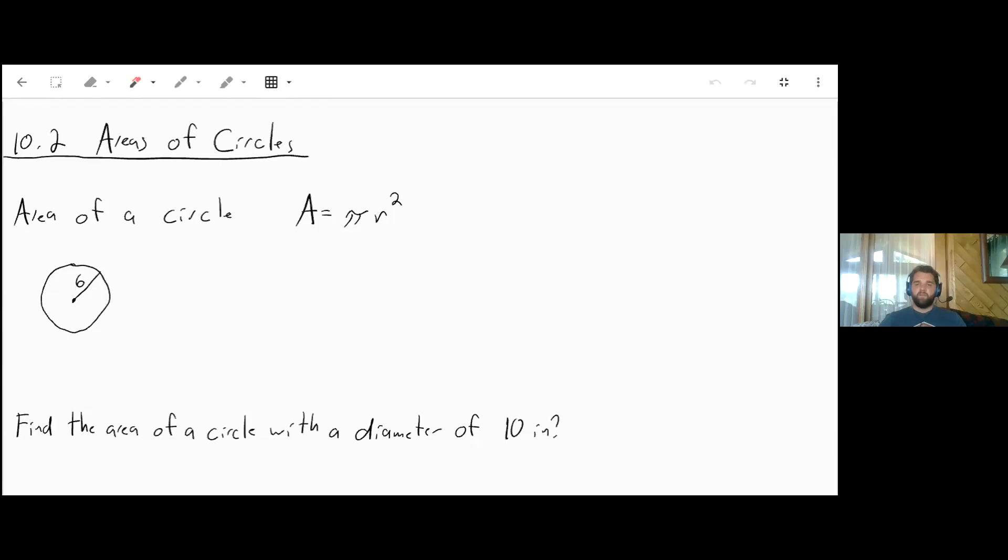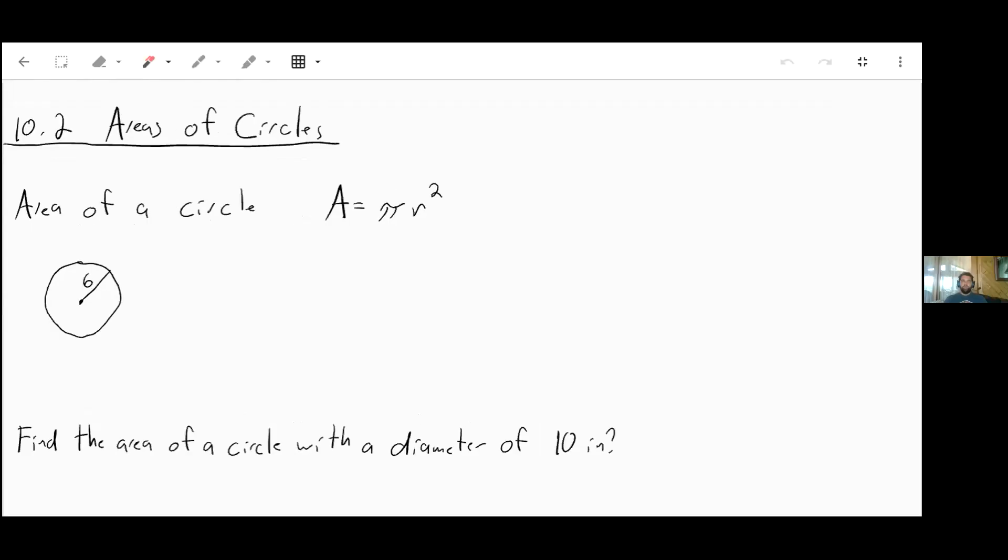Welcome to 10.2 Areas of Circles. As I'm sure you've worked with plenty of times, the area of a circle is that the area equals pi times the radius squared.